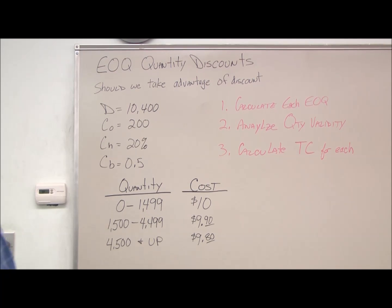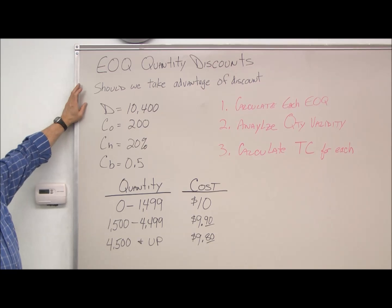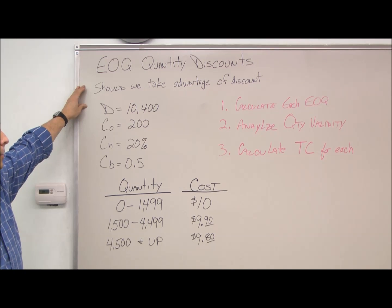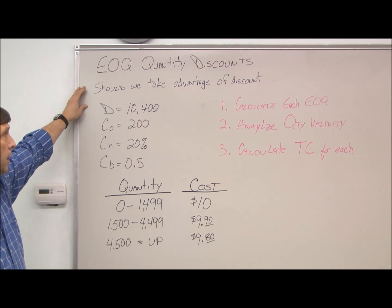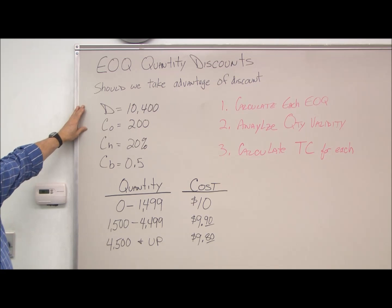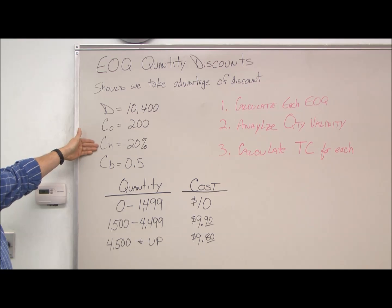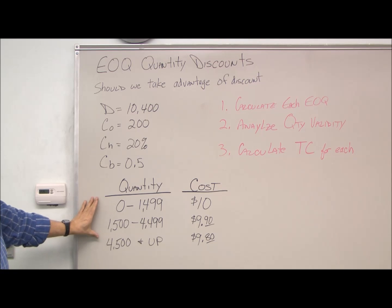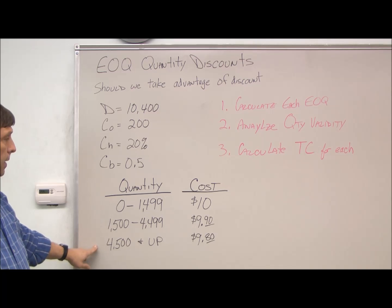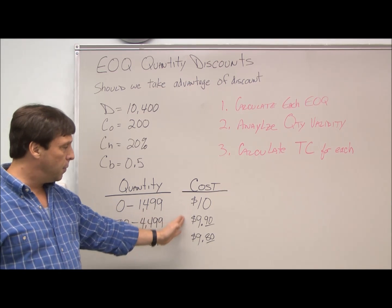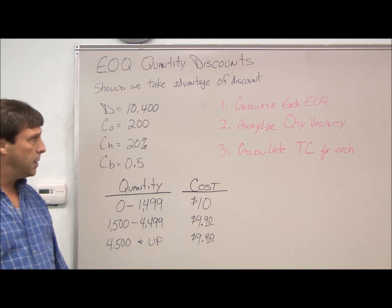For the EOQ discount model, what we're really asking is, should we take advantage of quantity discounts? So this is our brown sugar example again, where we have our demand. You notice that I put the holding cost as the percentage of the inventory cost. What we have here is what our supplier has given us as the quantity discounts. These would be our costs based on those discounts.